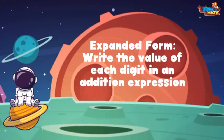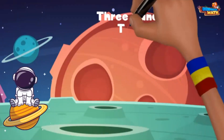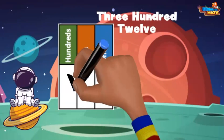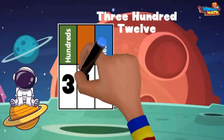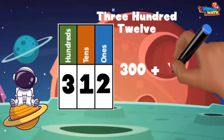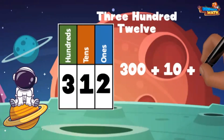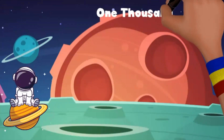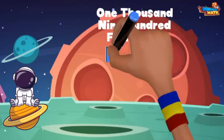Let's start with a little number. If I write the number 312 on a place value chart, we can see there are 3 hundreds, 1 ten, and 2 ones. This means the 3 is worth 300, the 1 is worth 10, and the 2 is worth 2. As an addition sentence, this is 300 + 10 + 2. This is expanded form.